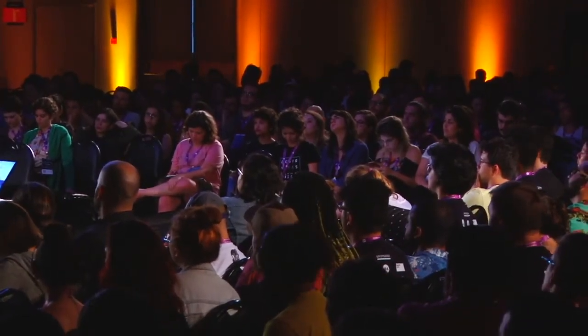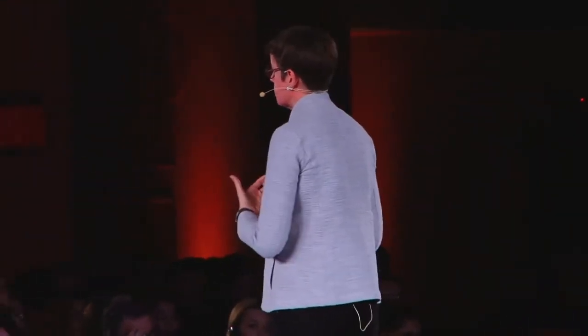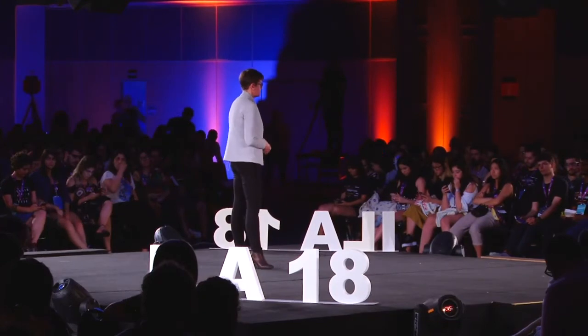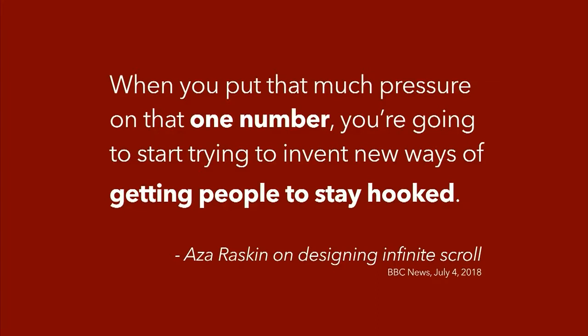Let's say my goal in life is to be as fit as possible. I'm going to weigh that against my desire to watch Game of Thrones, or spend time with my family, or have that piece of chocolate cake. There are certain things I'm not going to give up in order to be as fit as possible — there's a boundary there. And we're often not doing this in our organizations. Aza Raskin did an interview with the BBC about the invention of infinite scroll on Facebook — that thing that just keeps you flicking through the feed forever. He said when you put that much pressure on one number, the engagement metric, you're going to start inventing new ways of getting people to stay hooked.